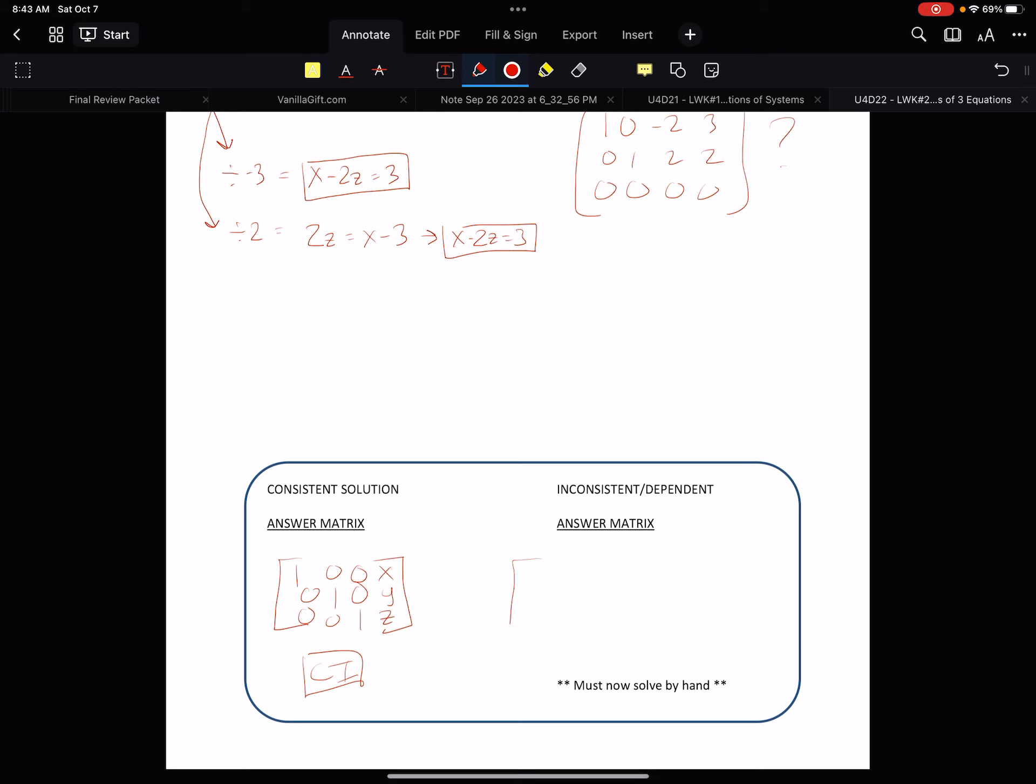Anytime you use your matrix and you don't get the diagonal row of 1s, that's because there's an inconsistent or consistent dependent answer. So the rule of thumb is this: if you get all zeros across the bottom with junk up here, it's a consistent dependent. On the flip side, if we get three zeros and a 1, that's an inconsistent with whatever's here. Answer matrix - diagonal row of 1s with the answers. Zeros across the bottom - consistent dependent. Zeros with a 1 - inconsistent.